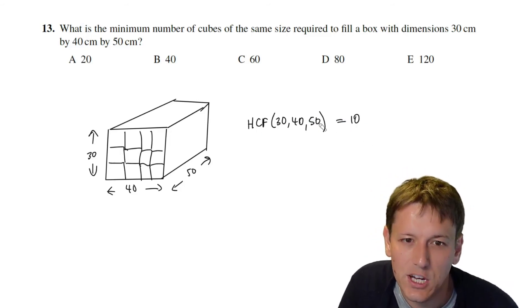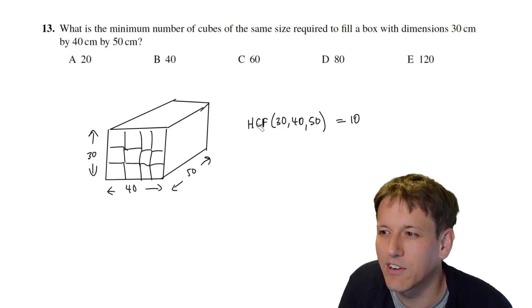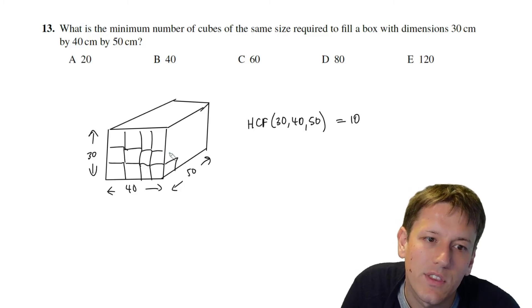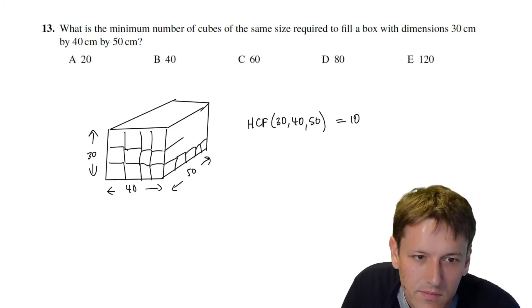Now the highest common factor of 30, 40 and 50 is pretty clearly 10. You could use other methods to work this out but you can see 10 is a common factor of all of them as well because they all end in a 0 and then 3, 4 and 5 don't have any common factors so we can't do any better than that.